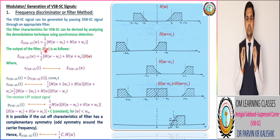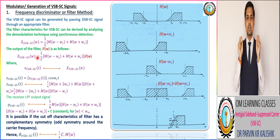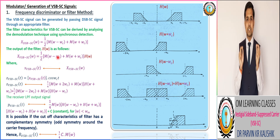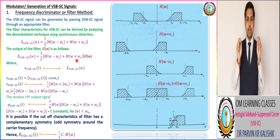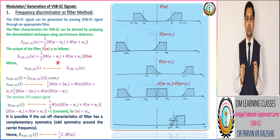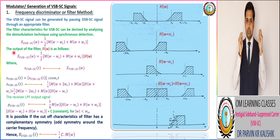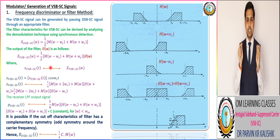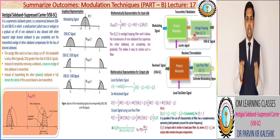In the frequency domain, the DSBSC signal is multiplied with the transfer function of this appropriate filter, known as the vestigial filter, and we get the VSBSC transmitted signal that is equivalent to (1/2)[M(ω - ωc) + M(ω + ωc)] multiplied with H(ω), the transfer function of the vestigial filter.